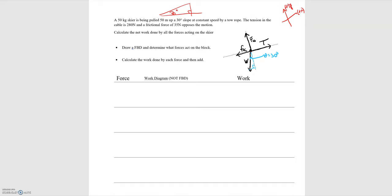Now that we've defined all of our forces, we can fill out the table: the normal force, the tension force, the kinetic frictional force, and the weight force — four forces in total. We'll need four work diagrams and calculate the work for each. The displacement vector is going to be along the positive x direction, since the skier is going up the slope.